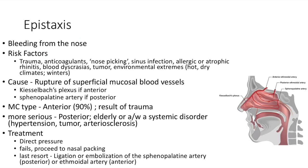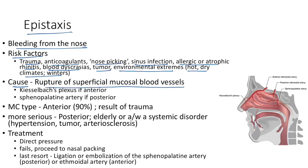Disorders of the nose and paranasal sinuses: epistaxis is bleeding from the nose. Risk factors include trauma, anticoagulants, nose picking, sinus infection, allergic or atrophic rhinitis, blood dyscrasia, tumor, and environmental extremes. The cause is rupture of superficial mucosal blood vessels. The blood vessels involved are Kiesselbach's plexus in anterior epistaxis and the sphenopalatine artery in posterior epistaxis.